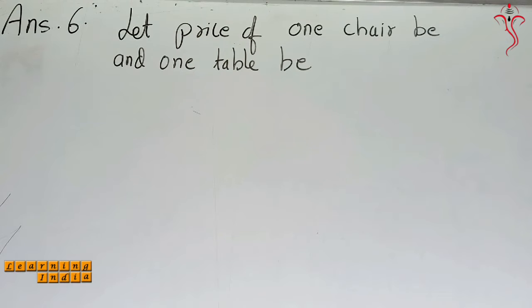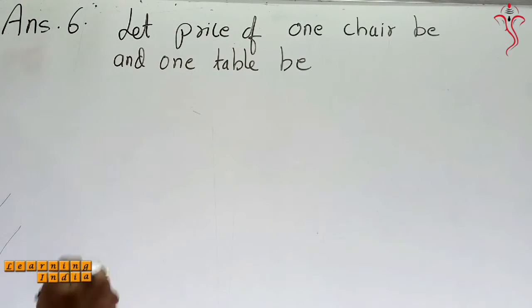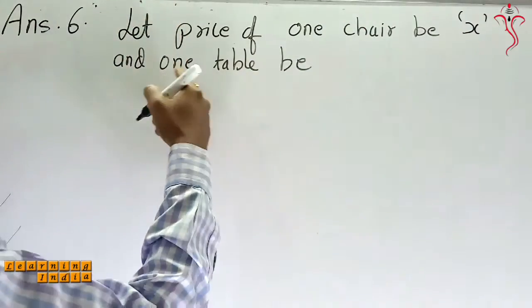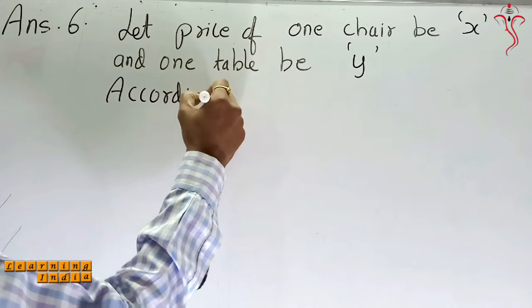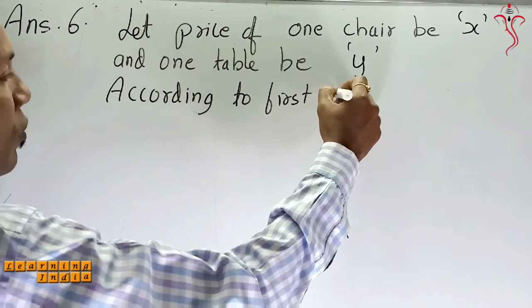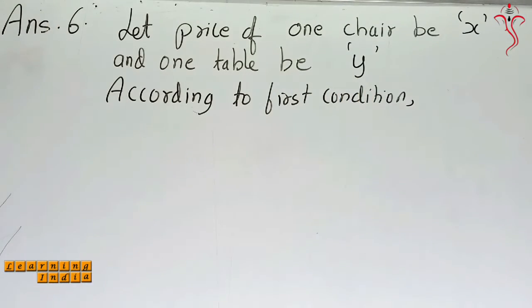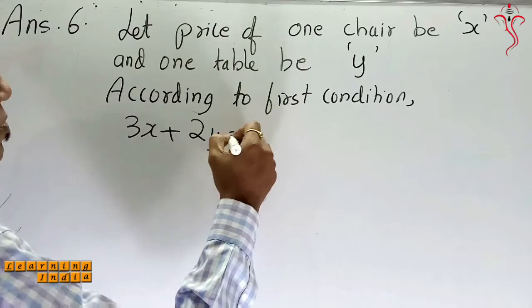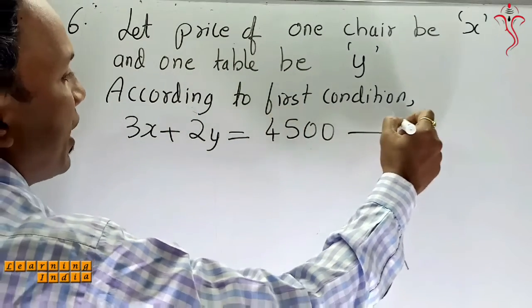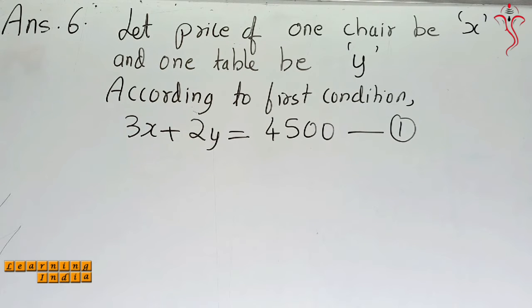Question number 6. They have given that the price of 3 chairs and 2 tables is 4500 rupees. Since we don't know the price of 1 chair, let the price of 1 chair be X rupees and the price of 1 table be Y rupees. According to the first condition: 3X plus 2Y equals 4500 — this is equation number 1.